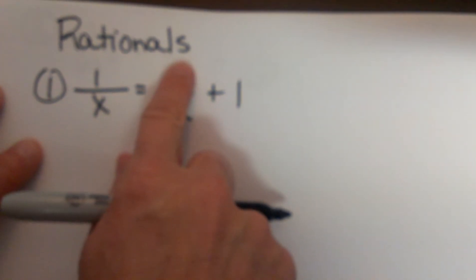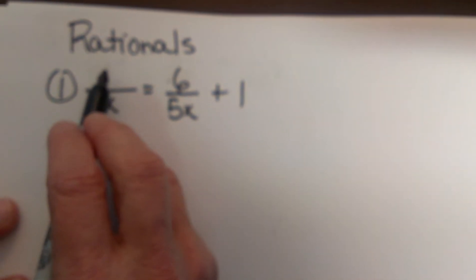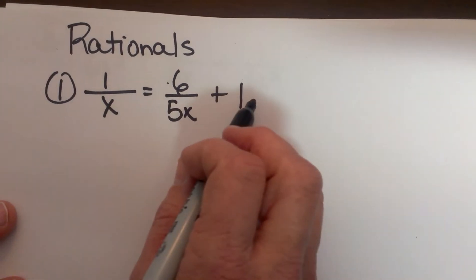We are going to look at how to solve a rational equation. So here is our first rational. We have 1 over x is equal to 6 over 5x plus 1.